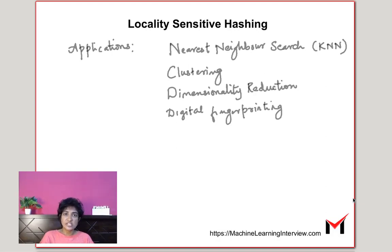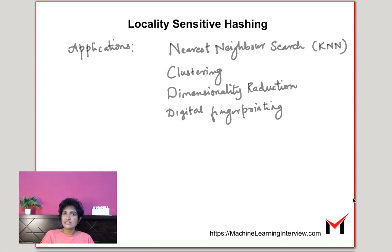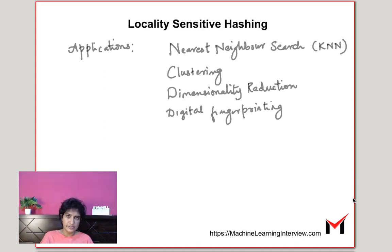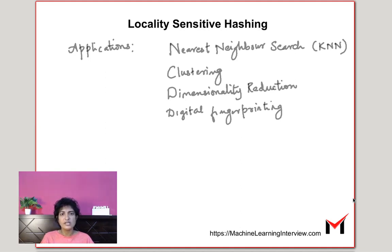Where is locality-sensitive hashing used? What are some applications of LSH? One of the most popular applications of LSH is nearest neighbor search, or it can be used to make KNN, K-nearest neighbors, more efficient. Think of a situation where you're using a music app, listening to a song, and you want to see similar songs recommended to you. There could be millions of songs in the database, so how do you compare the song you're listening to with every other song? LSH could be an efficient way of finding the nearest neighbor songs.